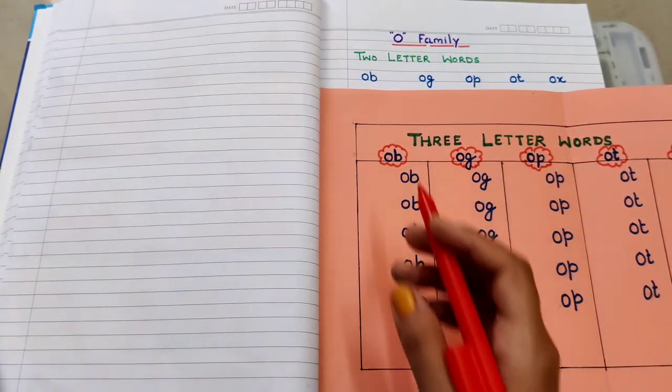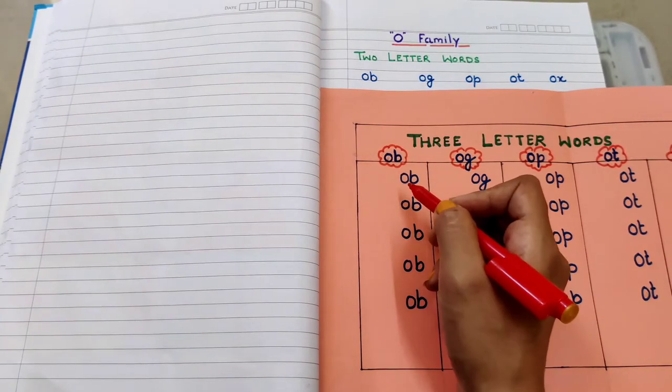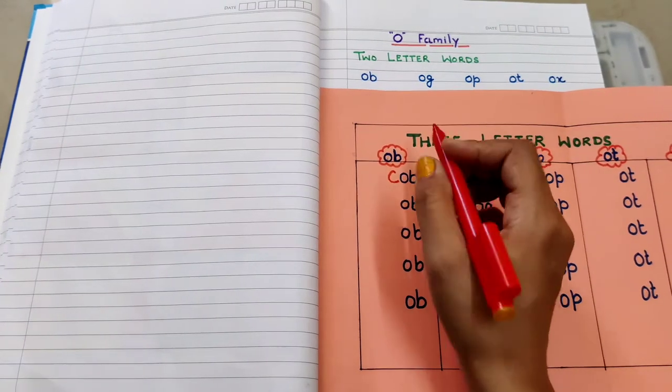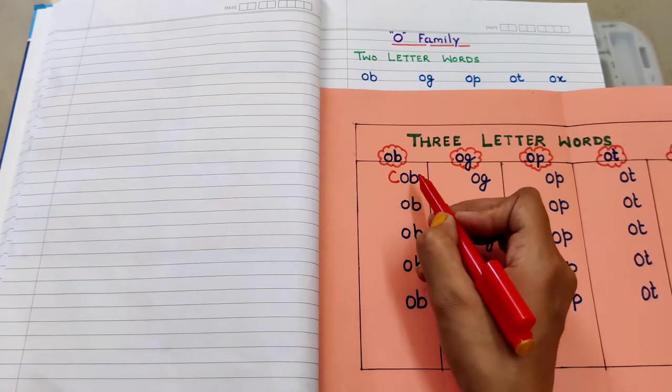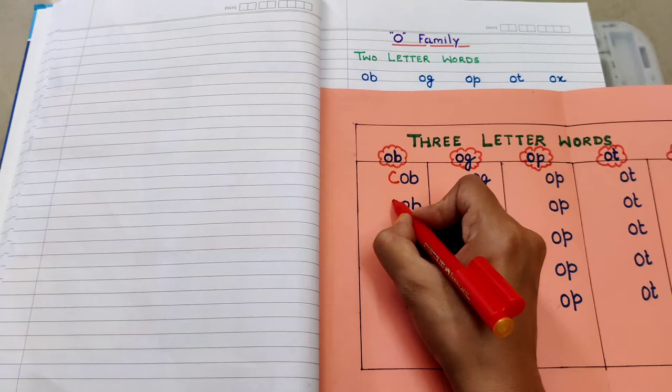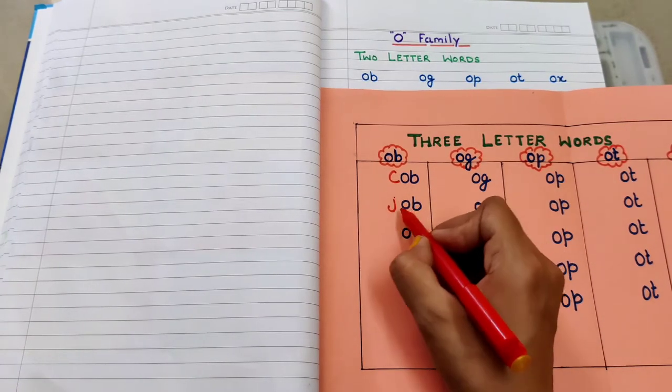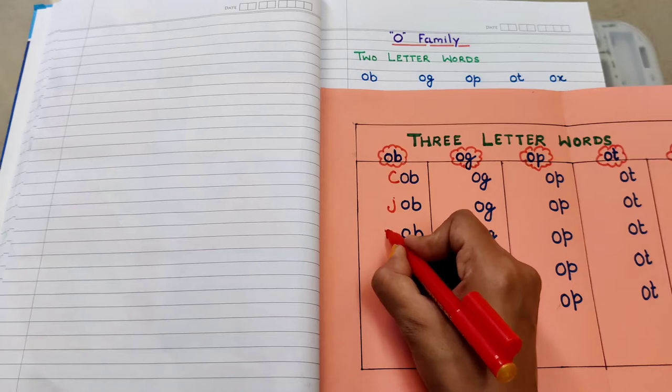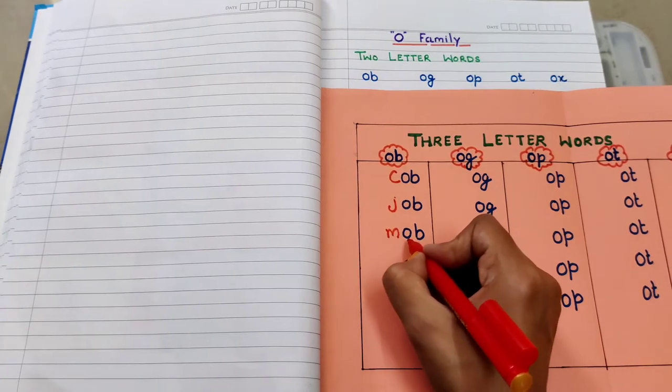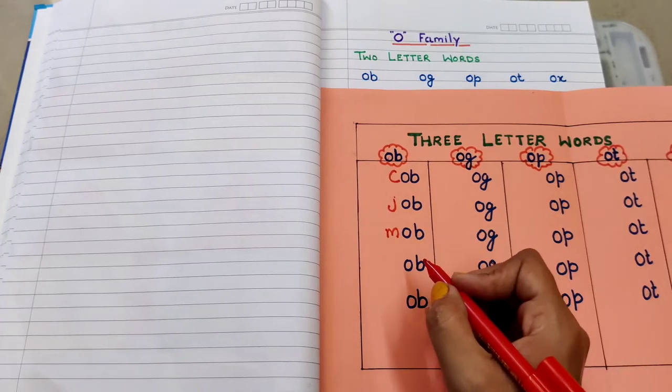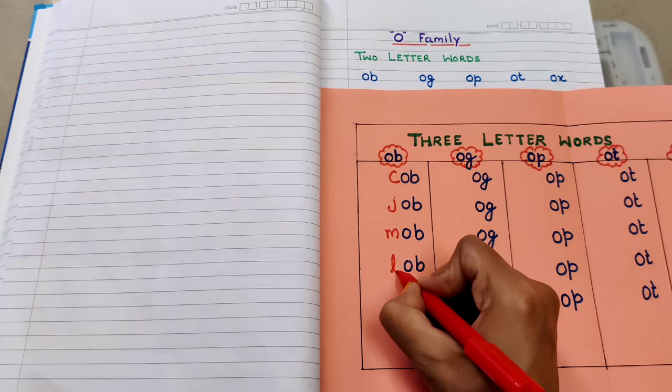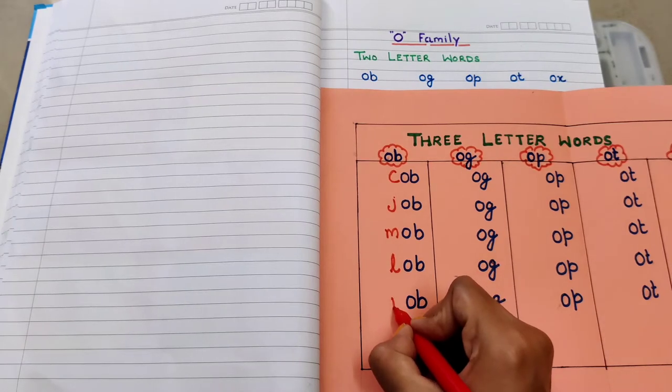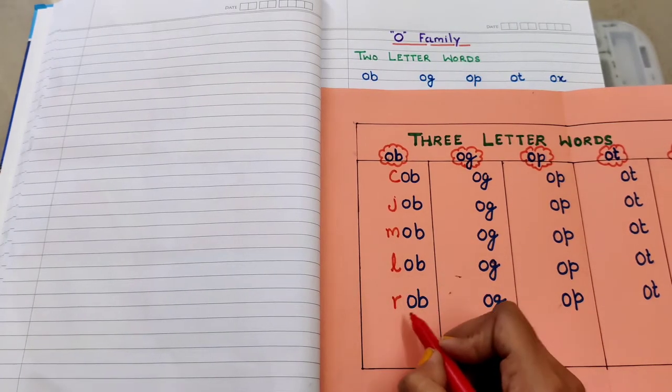This is the 'ob' rhyme. We will add beginning letters. I am adding C as a beginning - 'c-ob', cob. Next I'm adding J as a beginning sound - 'j-ob', job. Next I'm adding M as a beginning sound - 'm-ob', mob. Next I'm adding L as a beginning letter - 'l-ob', lob. Then I'm adding R - 'r-ob', rob.